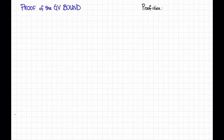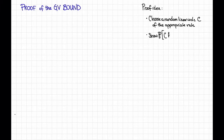For the rest of this video, let's prove the Gilbert-Varshamov bound. Here's the proof idea: we're going to choose a random linear code C of the appropriate rate, and then show that the probability that this random code C has good distance is strictly greater than zero. That will imply that there exists a code with that good distance. This approach is called the probabilistic method, and it shows up a lot in coding theory.